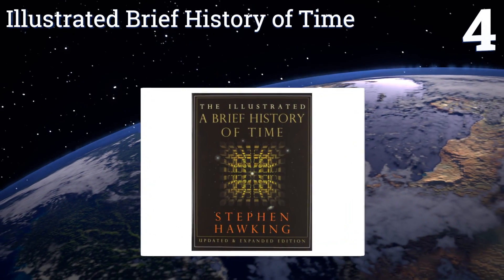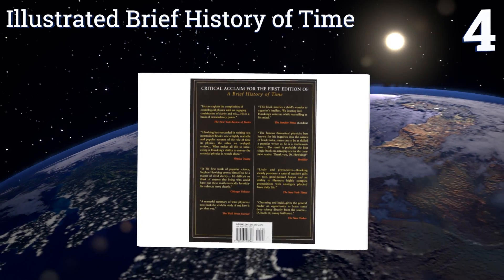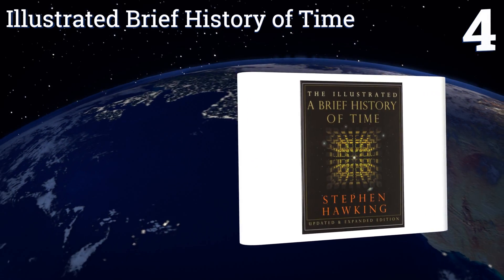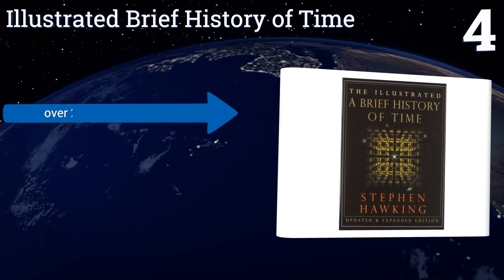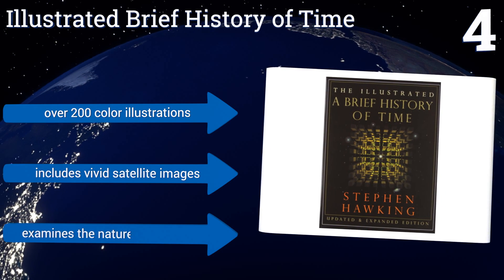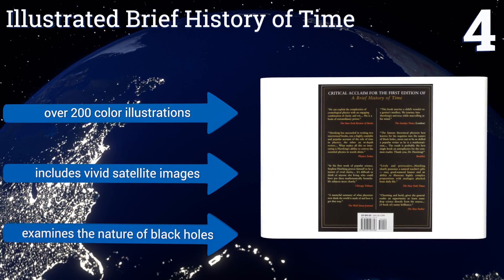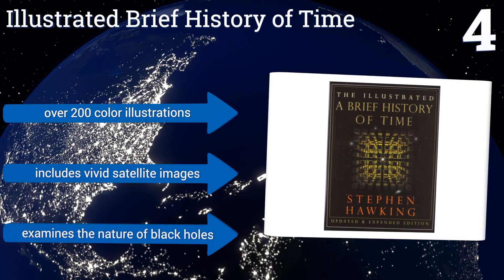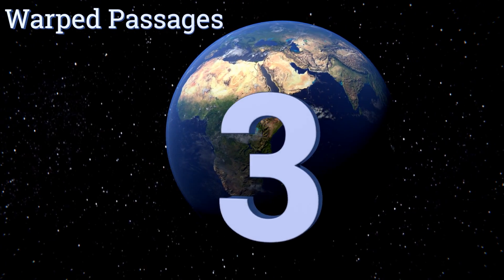At number four, The Illustrated Brief History of Time was written by renowned physicist Stephen Hawking and is a landmark in the category. It includes many of his theoretical predictions from the original 1988 publishing which have since proven to be true. It contains over 200 color illustrations and vivid satellite images. It examines the nature of black holes.